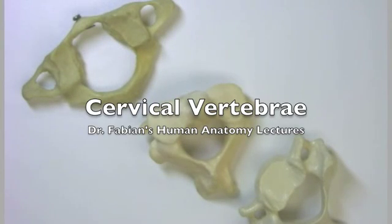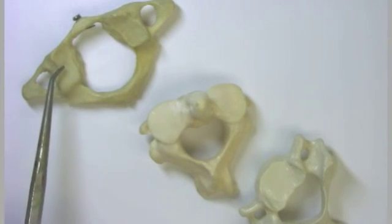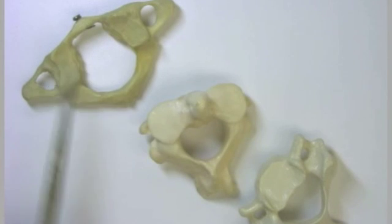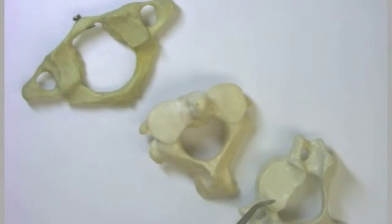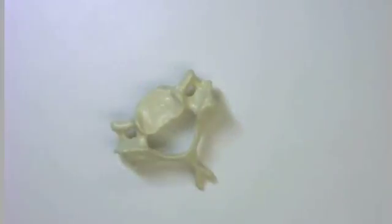There are seven cervical vertebrae. We're going to ignore the first two — the atlas bone and the axis bone — at least right now. We're going to concentrate mainly on a representative of cervical vertebrae three through seven. So let's move these out of the way and take a closer look at this one right here.